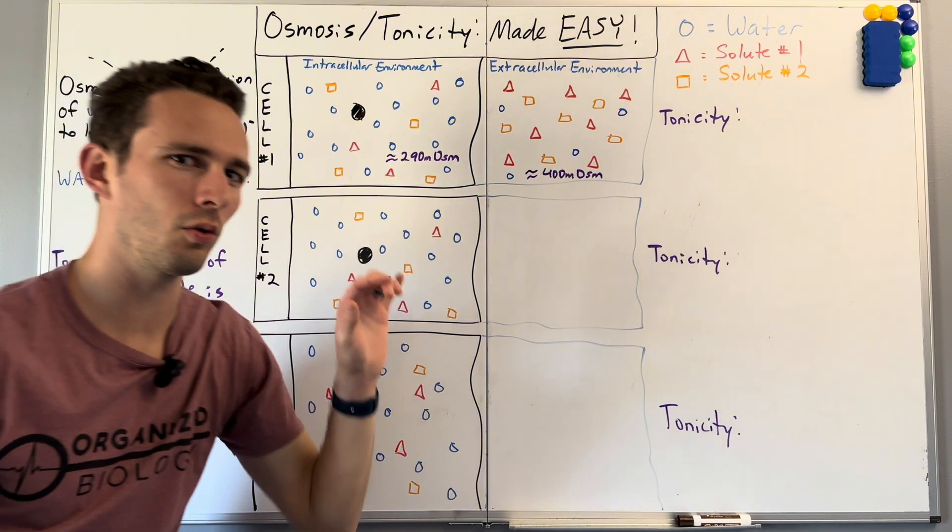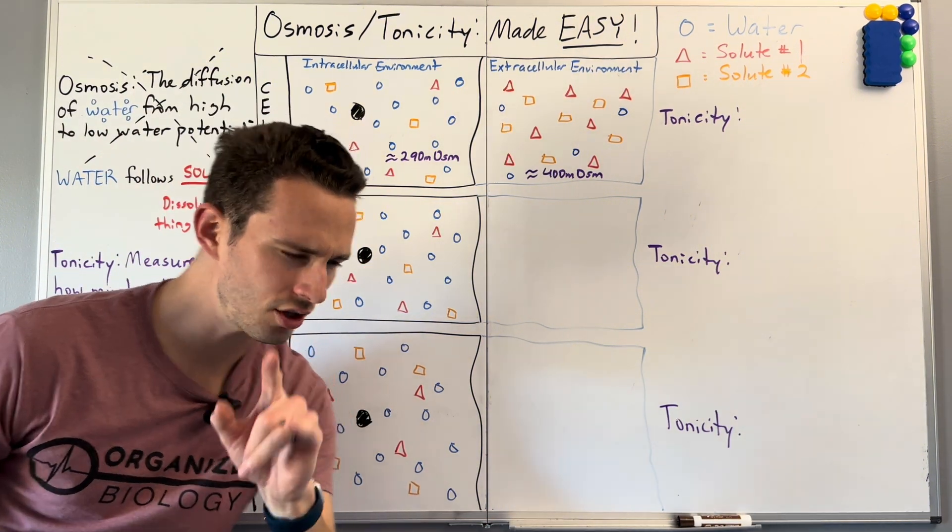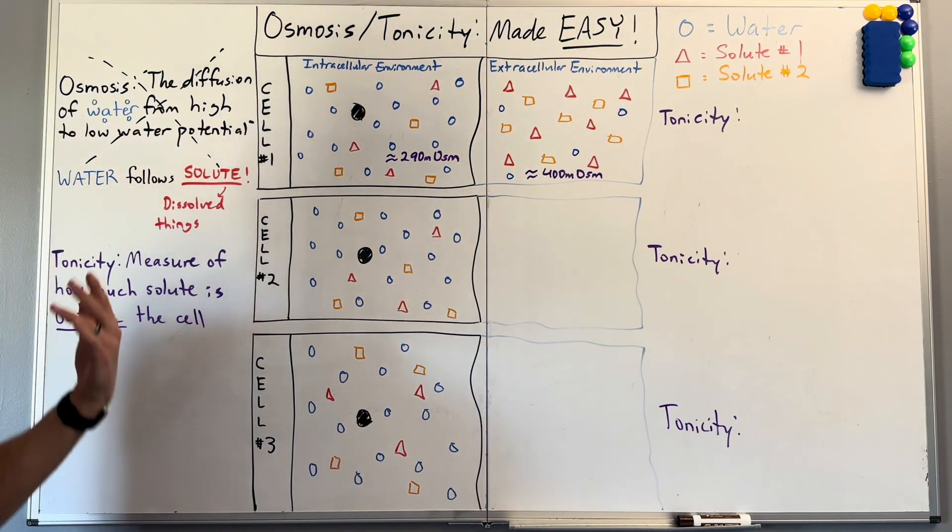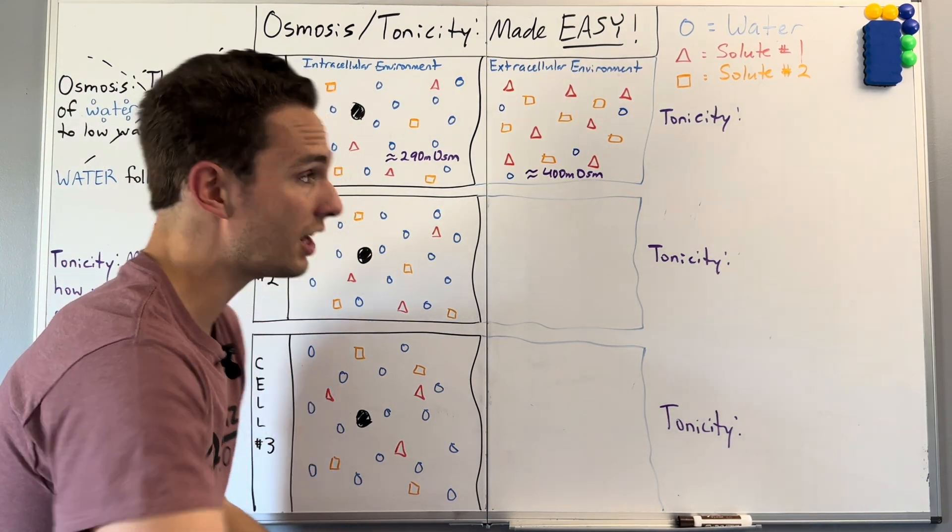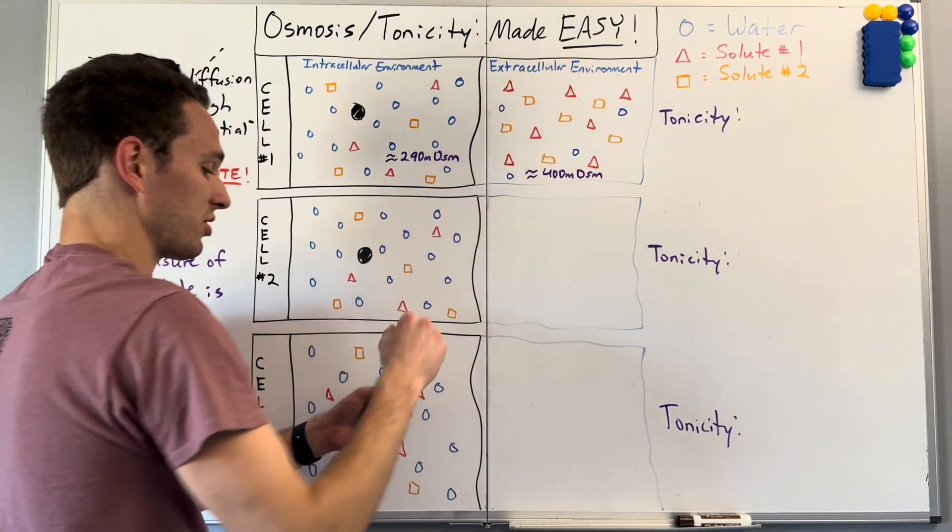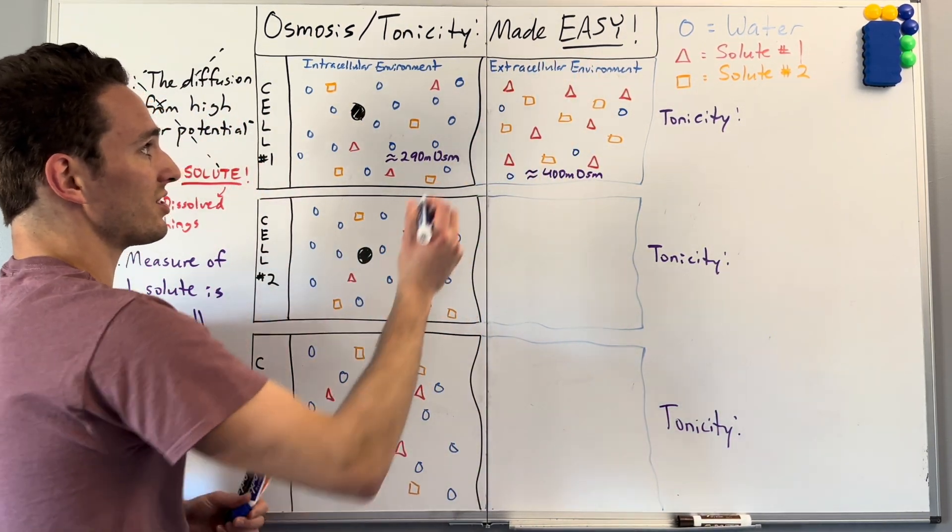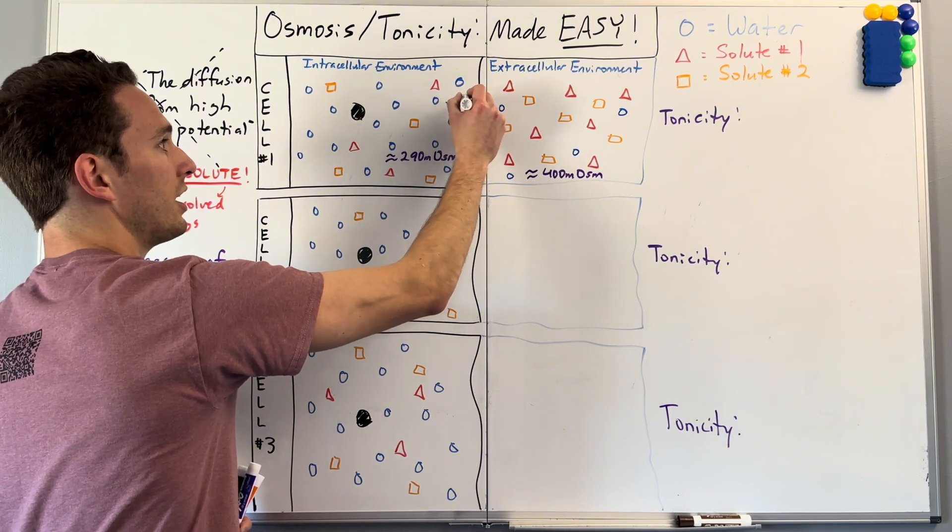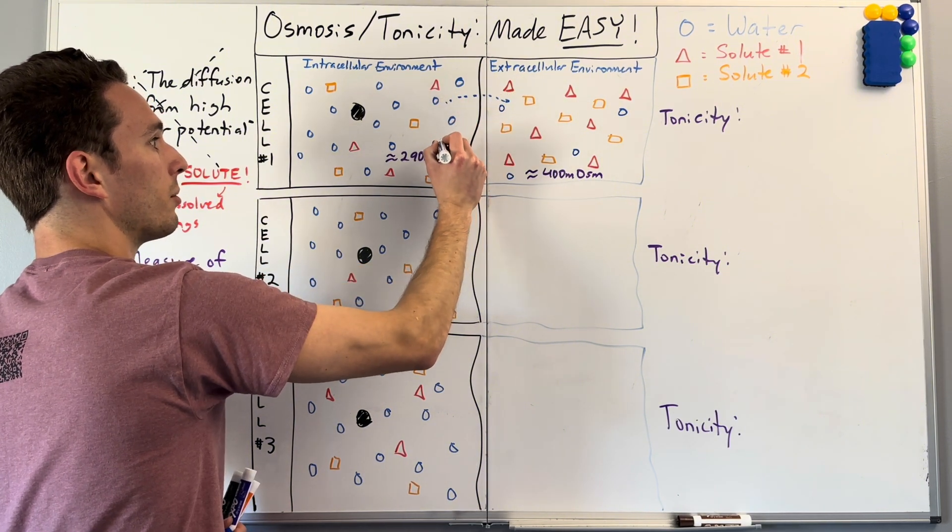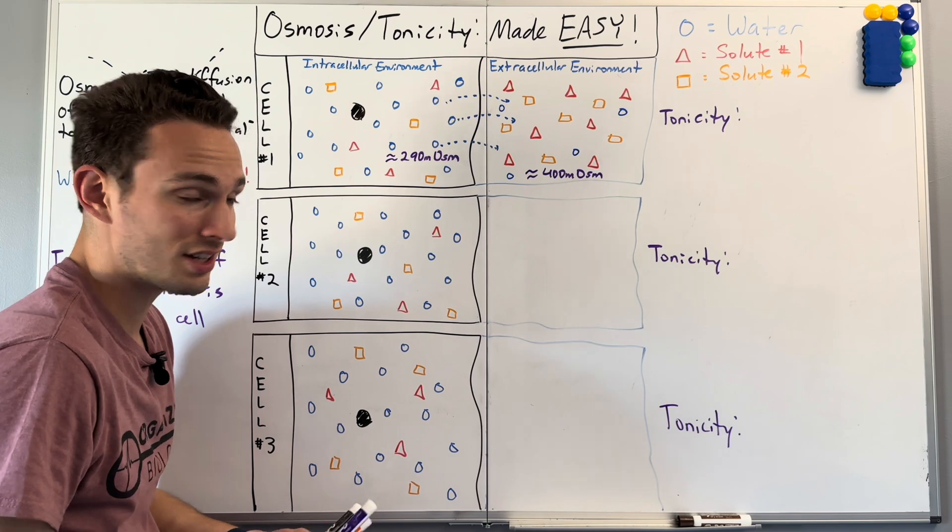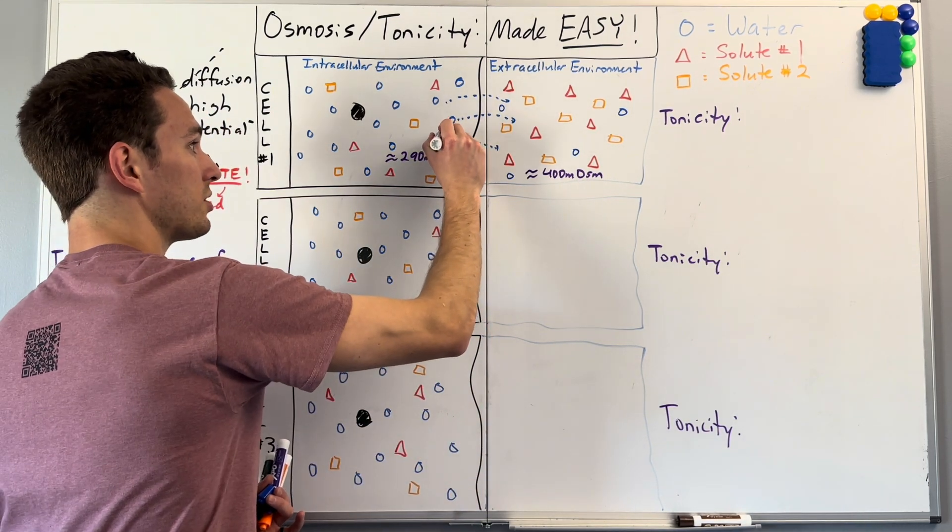Where will the water want to go? Well, you know that water likes to follow solute, the dissolved things. And where's there more solute? Obviously outside in the extracellular environment. So we are going to see water wanting to pass into this extracellular environment following the solute. That process, ladies and gentlemen, is called osmosis.